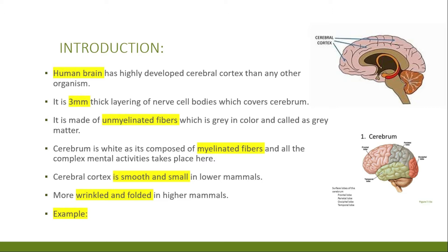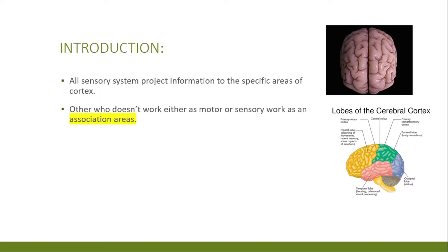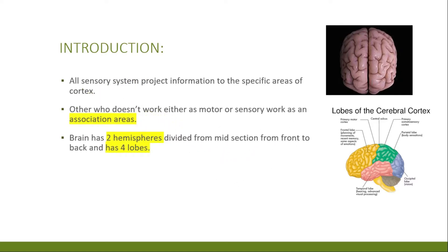The whole sensory system projects information to specific areas of the cortex: the motor area and the sensory area. The areas that are not part of the motor or sensory area are included in the association area.